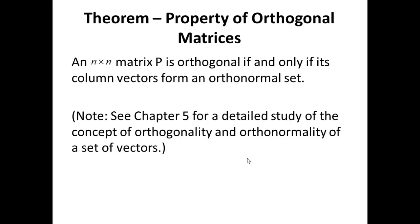An n-by-n matrix P is orthogonal if and only if its column vectors form an orthonormal set. We see the new word here: orthonormal. This is discussed in detail in chapter 5, so I encourage you to go back through those lectures. What I want you to remember from this theorem is that if P is orthogonal, its column vectors form an orthonormal set, and conversely, if the column vectors form an orthonormal set, then P is orthogonal.